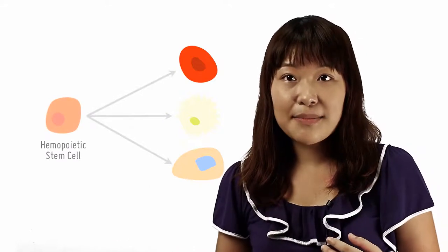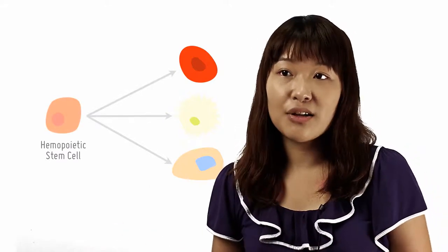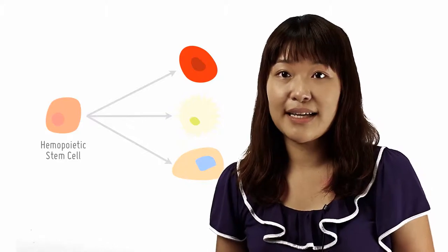This includes red blood cells for oxygen transport, various types of white blood cells to fight infection, as well as platelets which are involved in blood clotting. These cells have relatively short lifespans and because of this, hematopoietic stem cells in the bone marrow are needed to ensure the continual replacement of these blood cells.